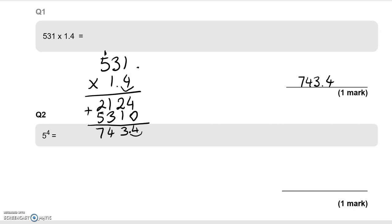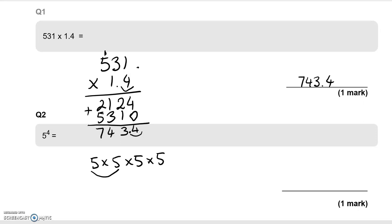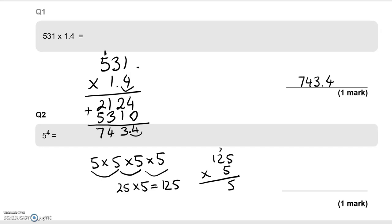Question 2: 5 to the power of 4, which means 5 times 5 times 5 times 5. 5 times 5 is 25. 25 times 5 is 125. Now we multiply that by 5: 125 times 5. 5 times 5 is 25; 5 times 2 is 10, and the carried 2 makes 12 — so 2 down and 1 carried over; 5 times 1 is 5 and the 1 makes 6. So the answer is 625.